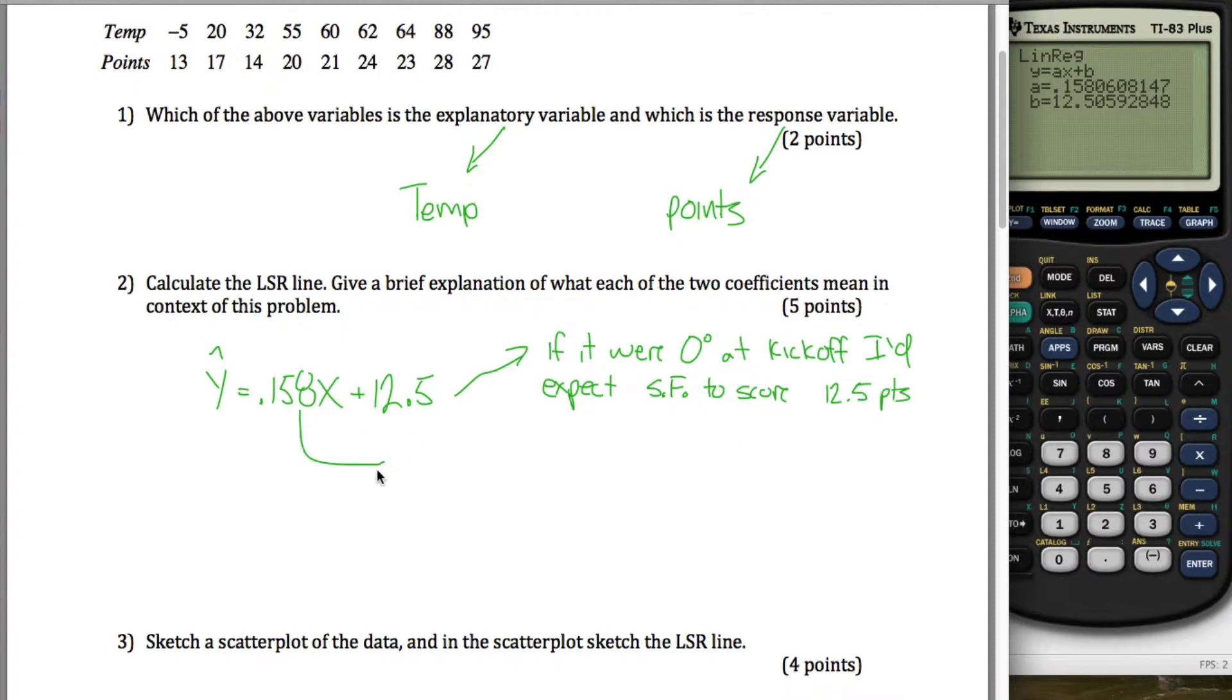And then this, my slope, is telling me how much y changes each time x changes by 1. In other words, for each increase, for each 1 degree increase in temperature, kickoff temperature, I expect the 49ers to score 0.158 more points.